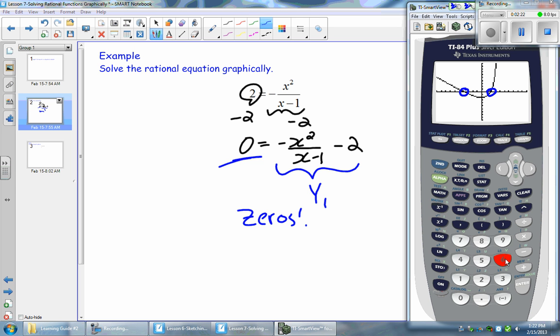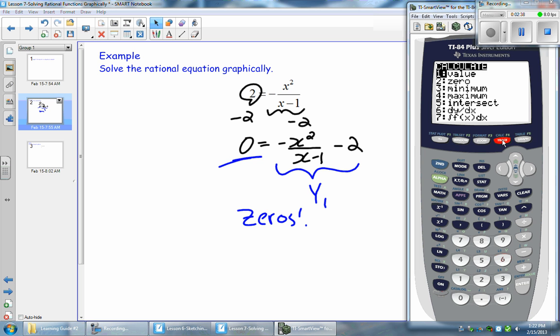So in order to find the solutions, we have to use the 0 feature on the calculator. So hoping by now you're quite comfortable with this feature. It's really useful when you find your x-intercepts. So it goes 2nd trace. Select 2 for 0.